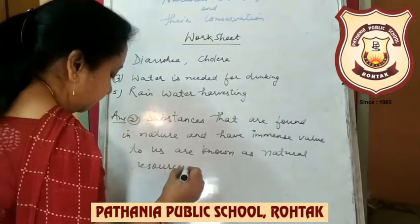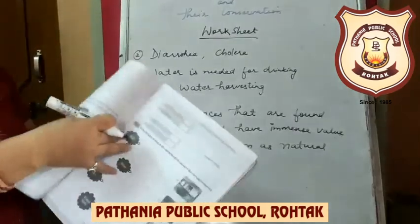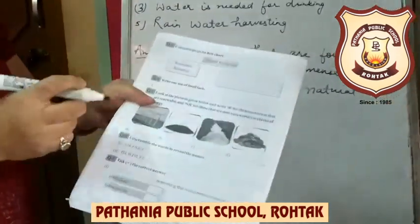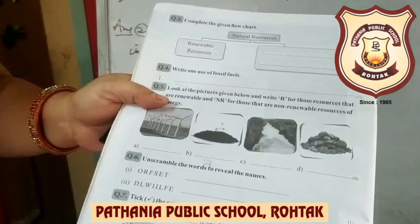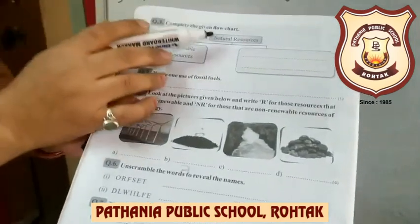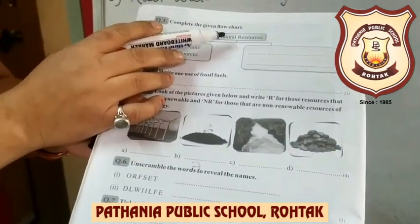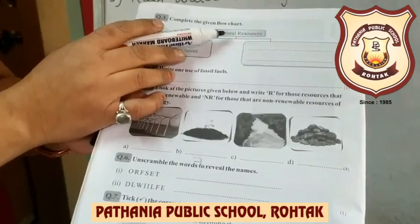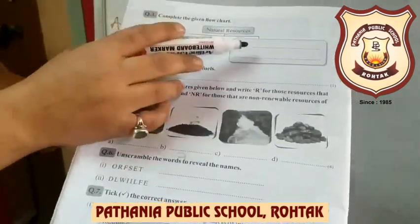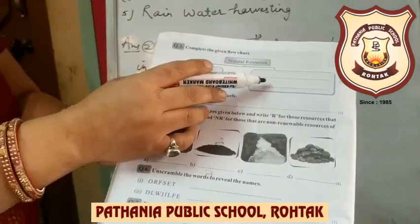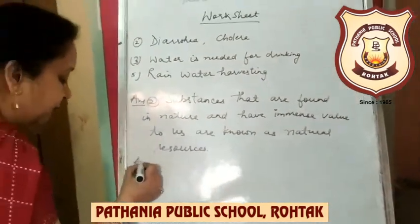Question number three: Complete the given flow chart. Natural resources are of two types: first, renewable resources, and second, non-renewable resources. Write these two types to complete the flow chart.